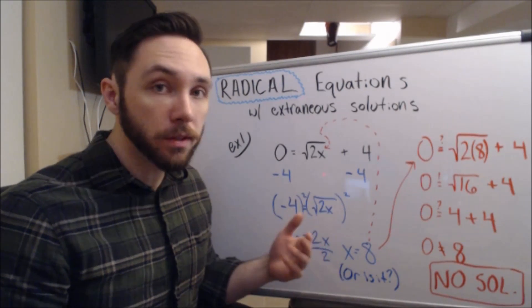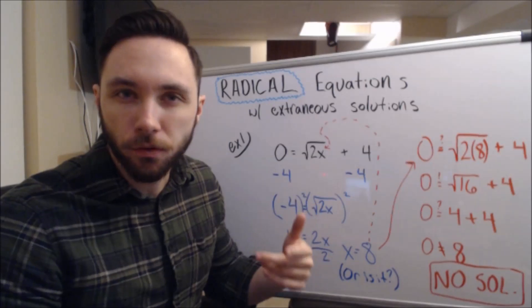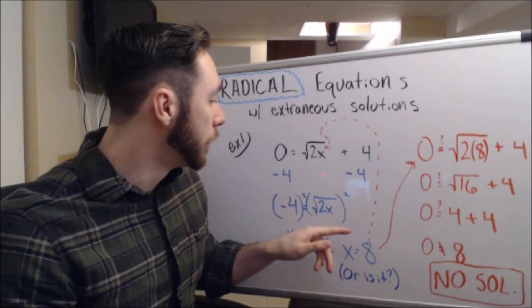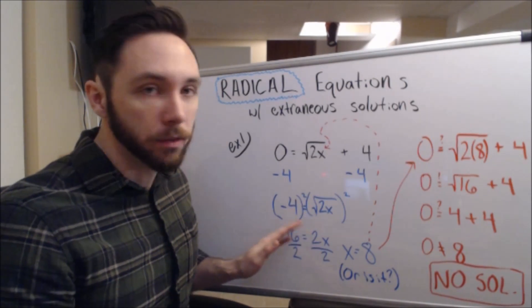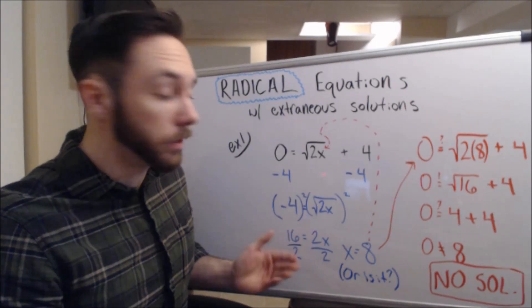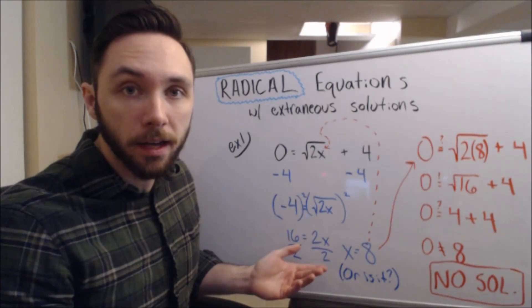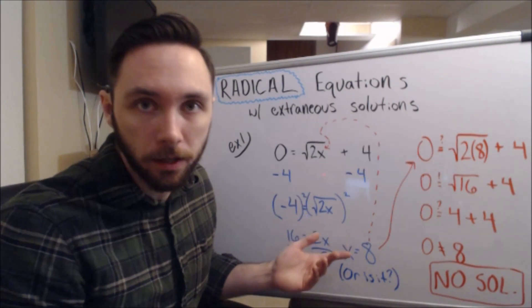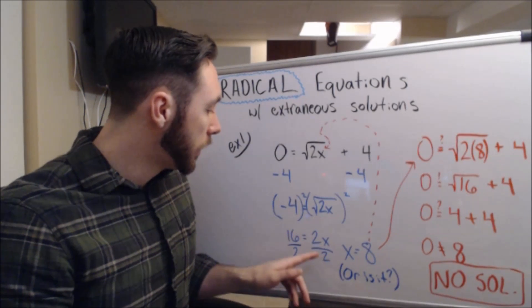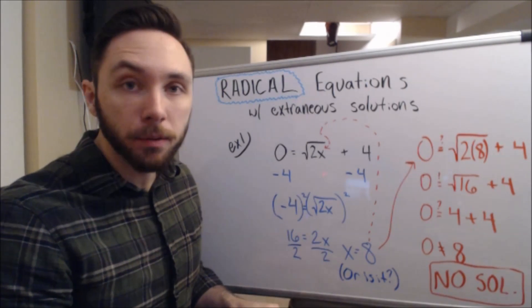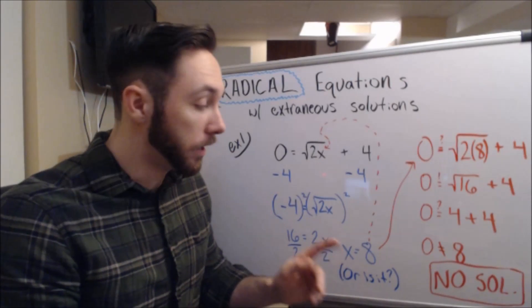You're going to get negative 4 is equal to the square root of 2x. To undo the square root, we square — they're inverses of one another. So when I square both sides, I'm left with negative 4 times negative 4 to get 16, and then on the right side 2x because the radical now goes away. Now I divide both sides by 2 and I simply get x is equal to 8.